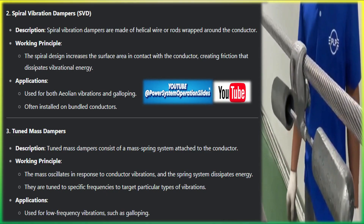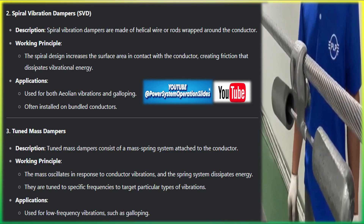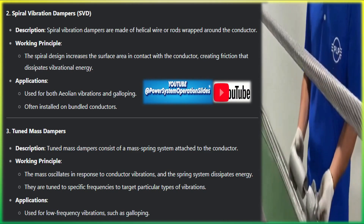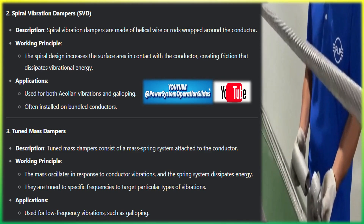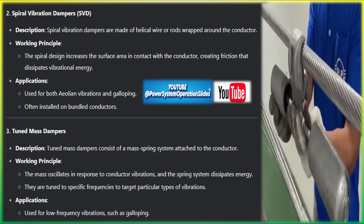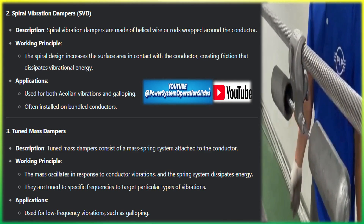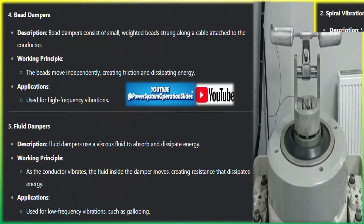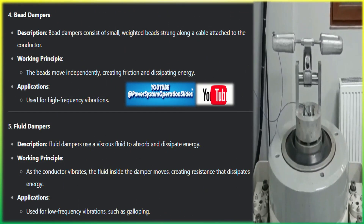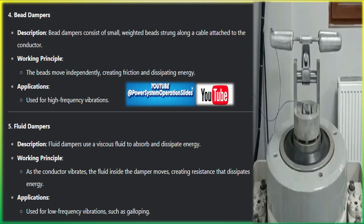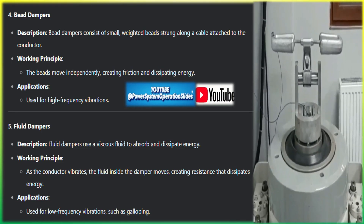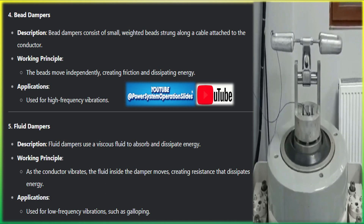Galloping is caused by ice or snow buildup on conductors, leading to aerodynamic instability. The wind flows over the ice-coated conductor, creating lift that causes large, low-frequency oscillations. Galloping results in large vertical and horizontal motions of up to several meters and low frequencies of 0.1 to 1 Hz. This can result in phase-to-phase or phase-to-ground short circuits.